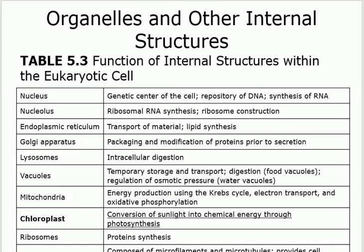Mitochondria, just like ours, make energy. They have different types of cycles — the Krebs cycle, electron transport chain, oxidative phosphorylation — all just like our mitochondria. Chromoplast, or chloroplast, is something we don't have in human cells, and not all eukaryotes have it.